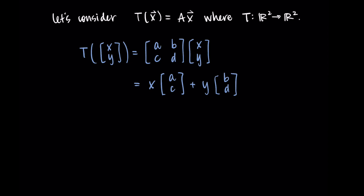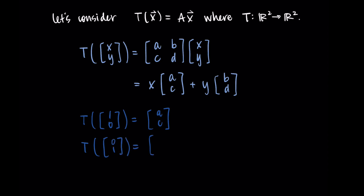So we're scaling the vector (A, C) by X and adding it to the vector (B, D) scaled by Y. We're also going to be looking at the special vectors (1, 0) and (0, 1) — the basis vectors. Just remember that if we take T of the first basis vector, we get the first column of A, and if we do T of the second basis vector, we get the second column of A. We'll be going through all this math in steps when we look at the examples.